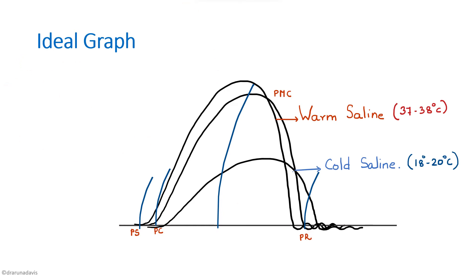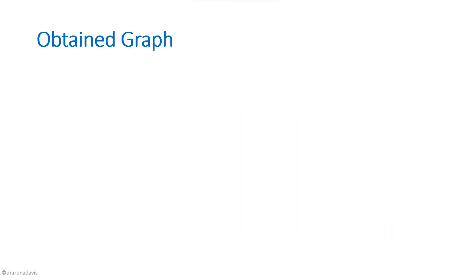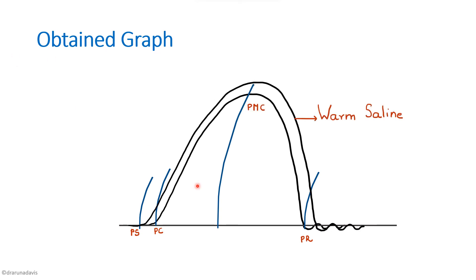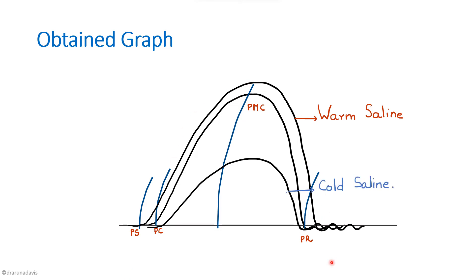There are two graphs for the effect of temperature: the ideal graph and the obtained graph. The obtained graph differs because of the inertia of the lever. For warm saline, the obtained graph shows a longer relaxation period because the lever takes time to come down after the increased amplitude. For cold saline, the relaxation period appears shorter in the obtained graph — again due to lever inertia.